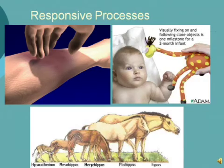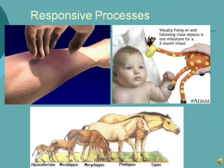Next, the responsive process has been organized into three categories: irritability, individual adaptations, and population adaptation — which we also refer to as evolution. Irritability isn't about being angry; it's more like a reaction to something, such as hitting your hand with a hammer, getting a mosquito bite, or an itchy rash.